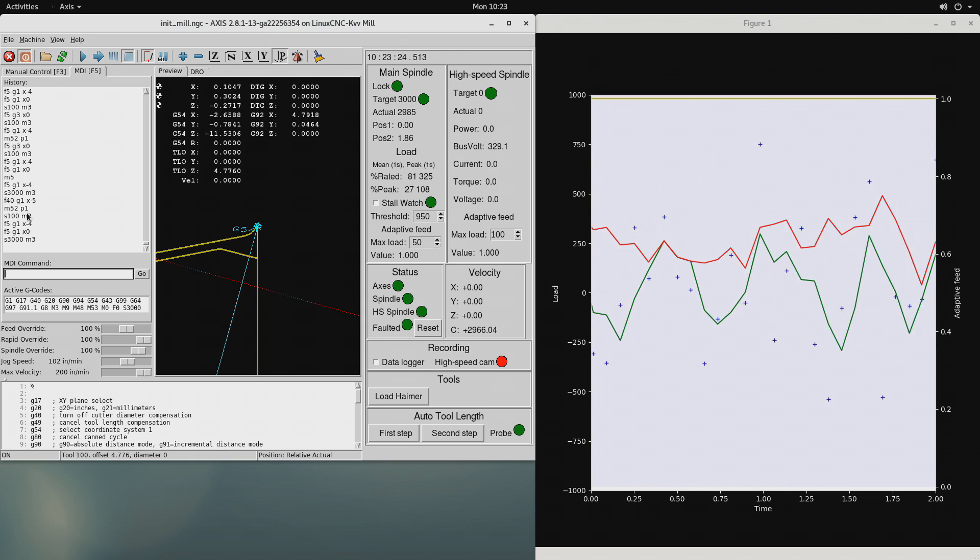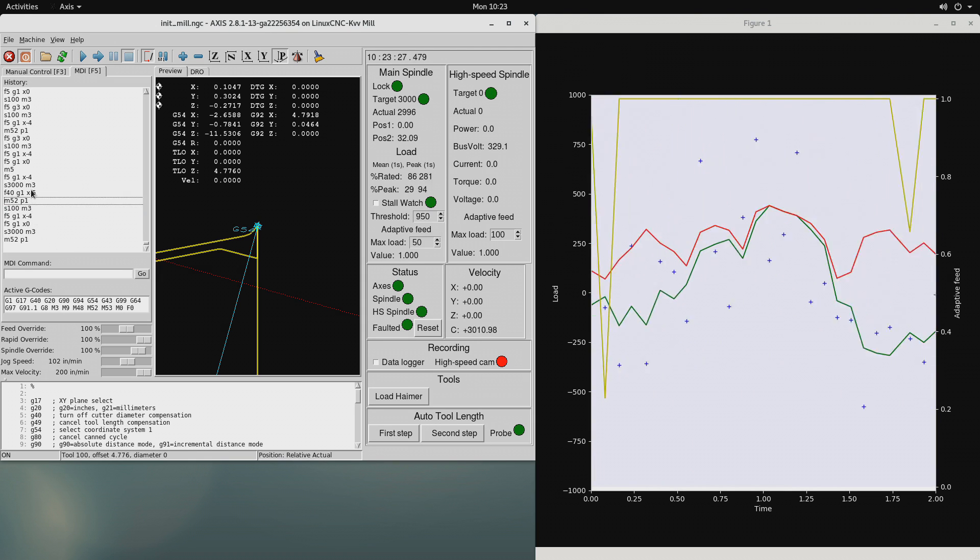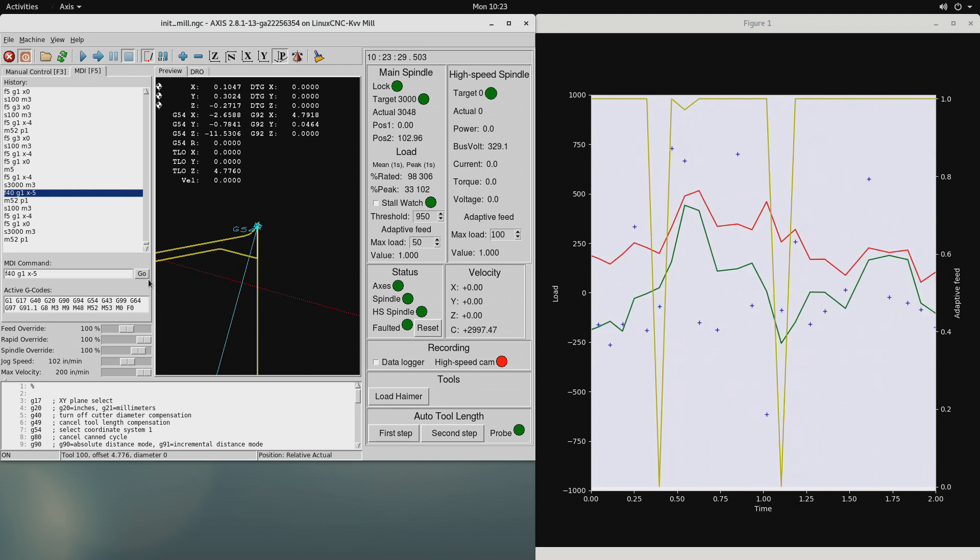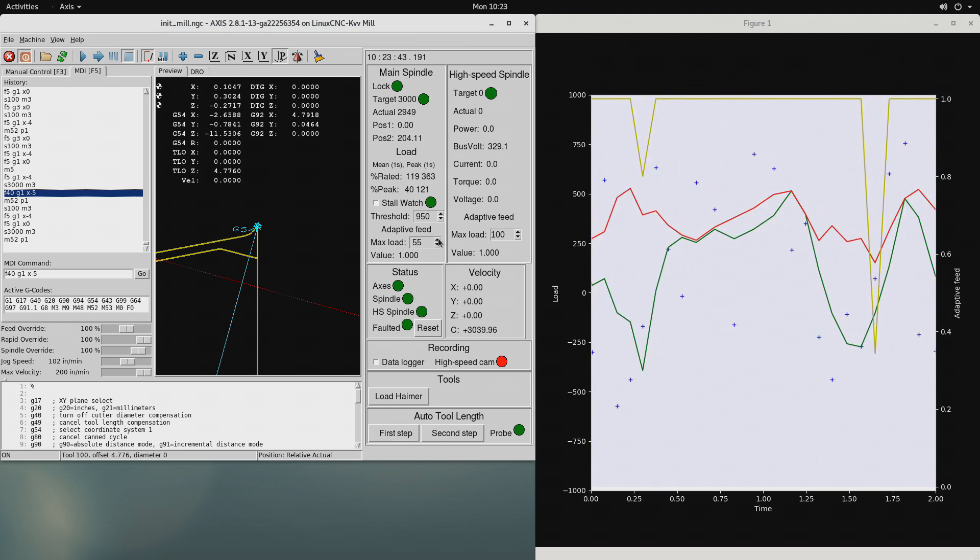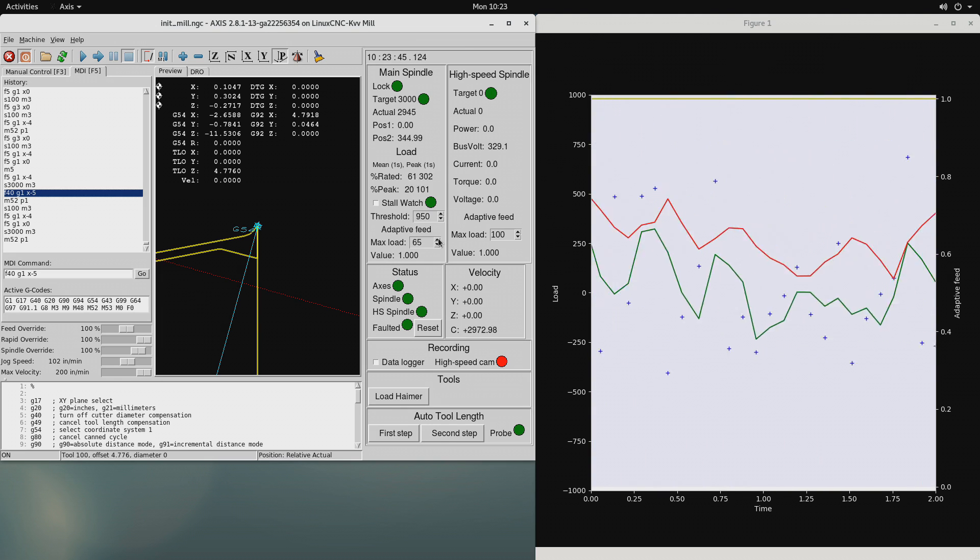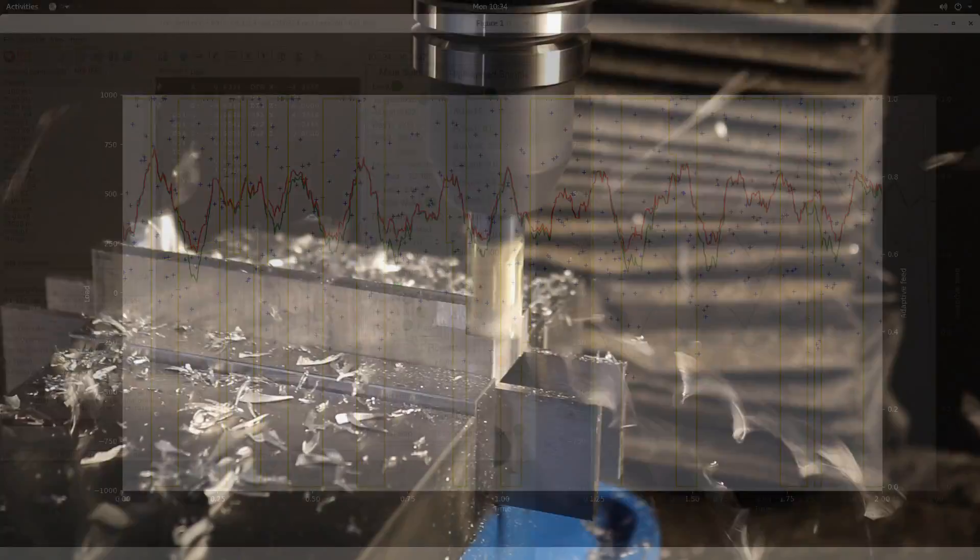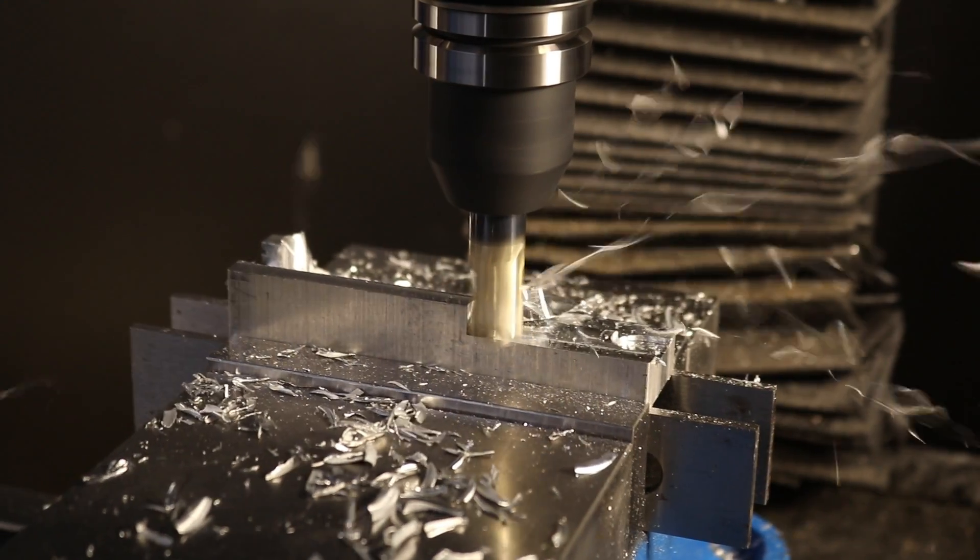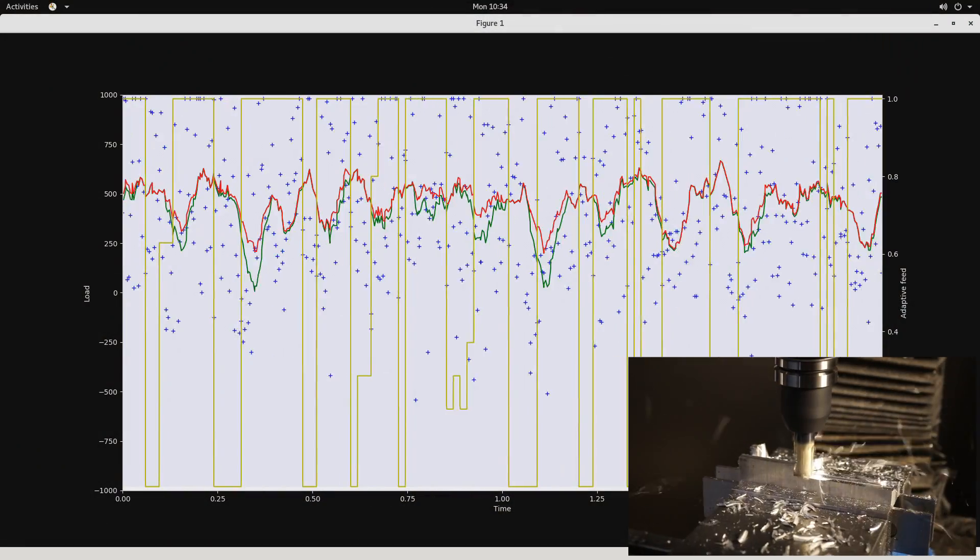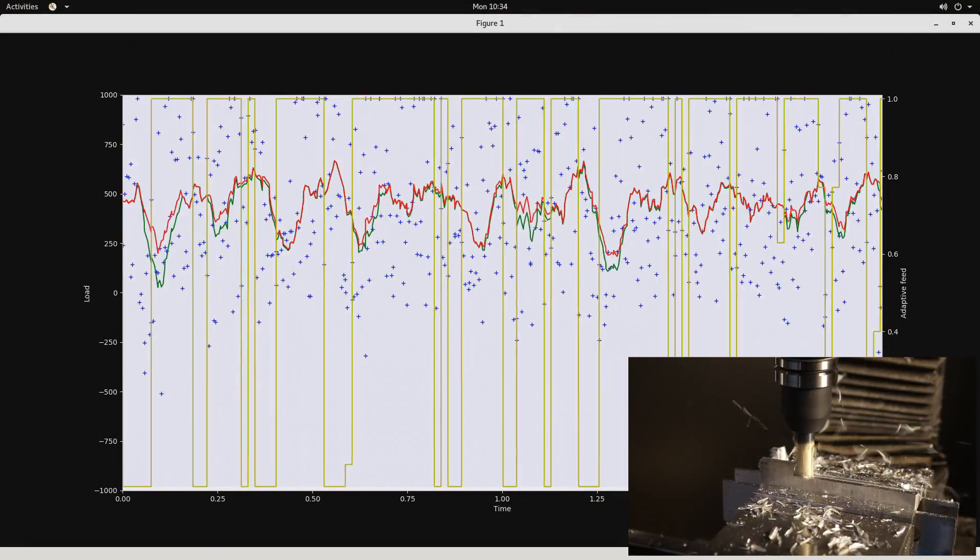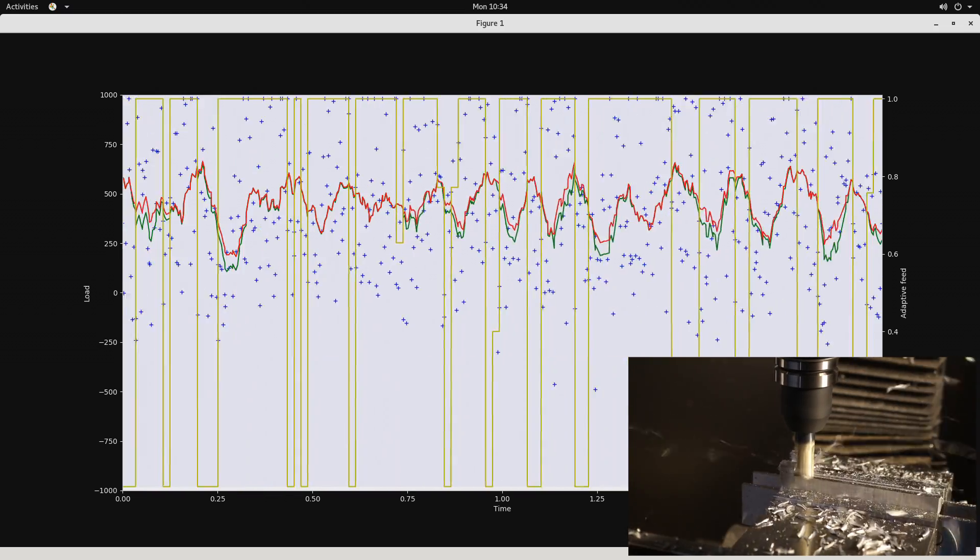The first attempt takes a pretty heavy cut with a control loop set to stay below 70% of the spindle's peak capacity, well below what's required for this cut at 40 inches per minute. The stall watch protection is disabled and the adaptive feed is enabled, and it's easy to see the feed start and stop and the adaptive feed rate multiplier shown as the yellow graph line bouncing between 0 and 1.